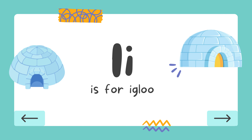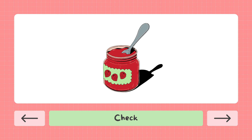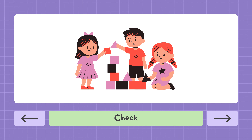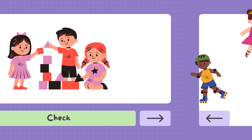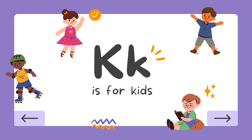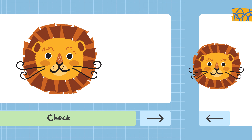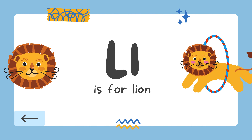I is for Igloo. J is for Jam. K is for Kids. L is for Lion.